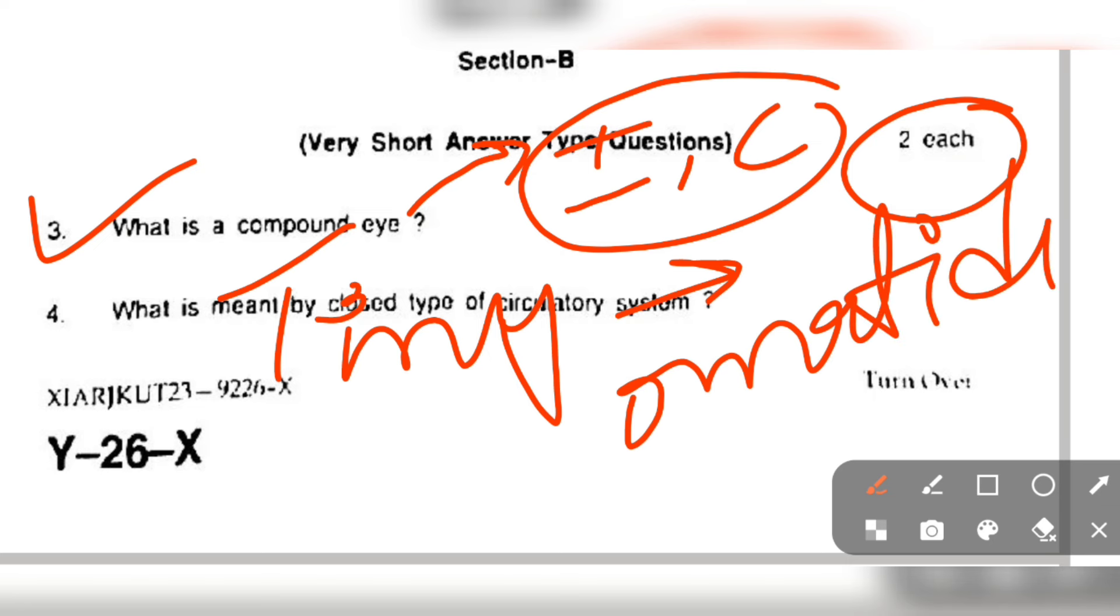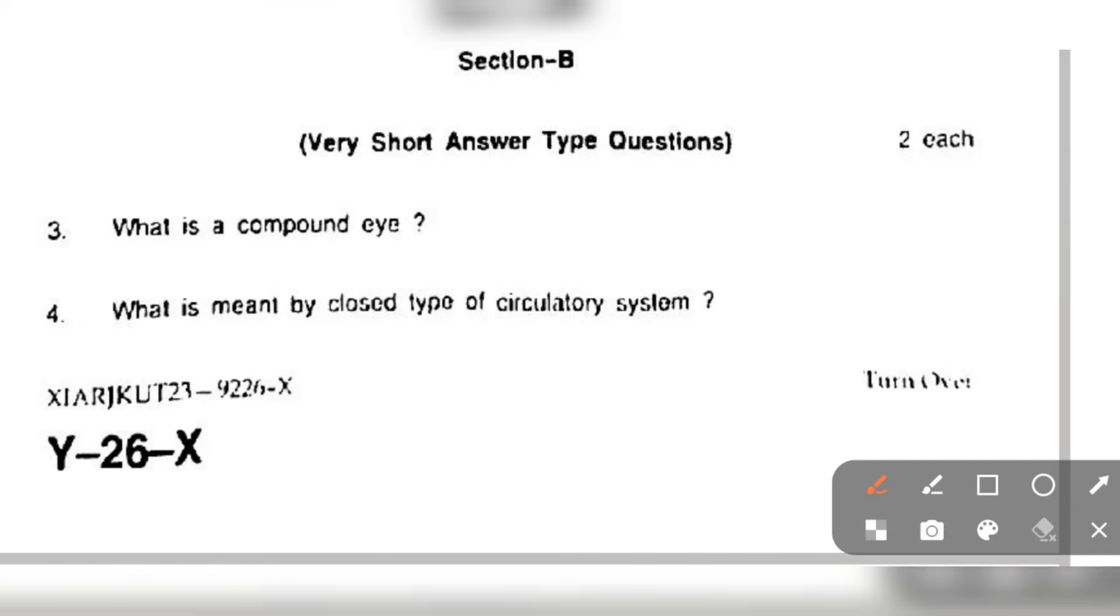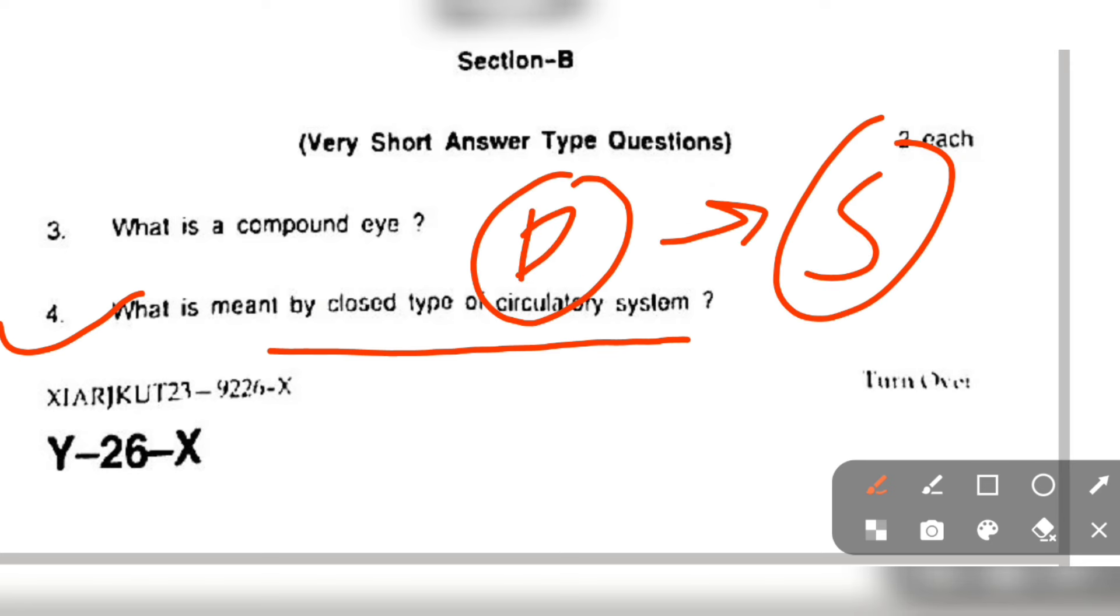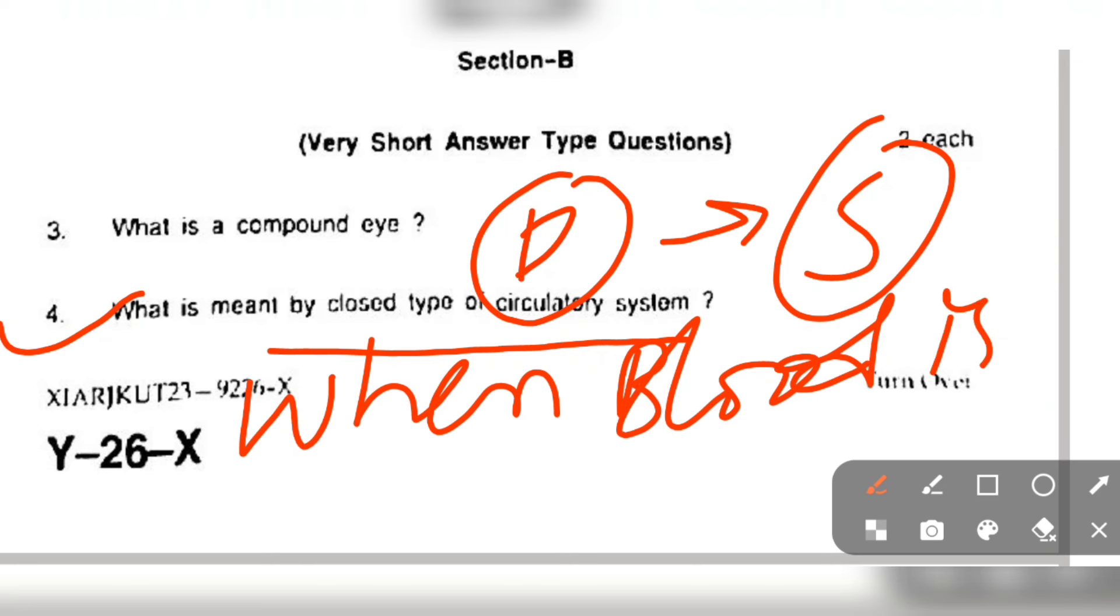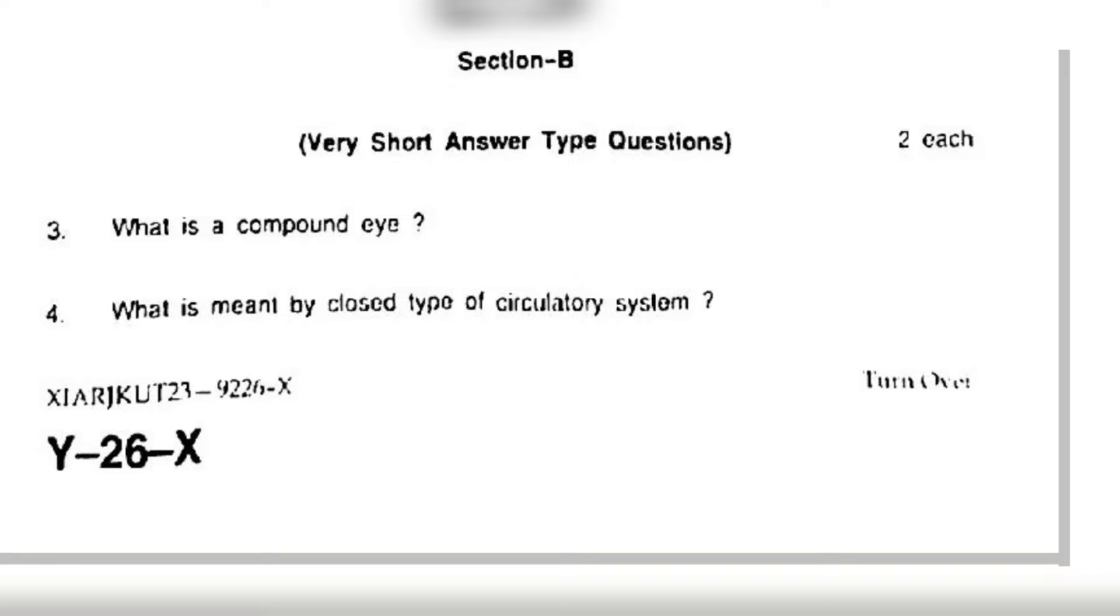We have another question: what is meant by the closed type of circulatory system? We can say it's when blood is contained inside the blood vessels. We have two types of circulation: one is pulmonary circulation, the other is systemic circulation. So we can say that when blood is contained inside the blood vessels, it is a closed type of circulatory system.